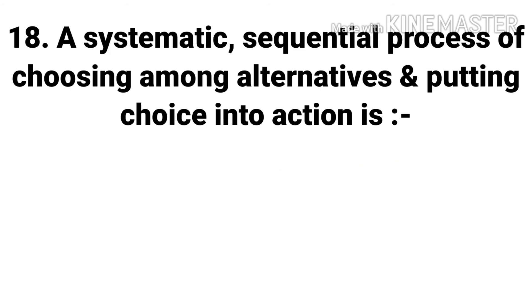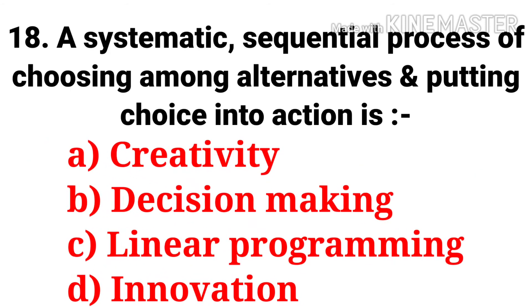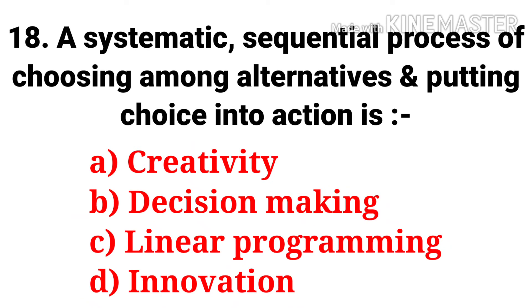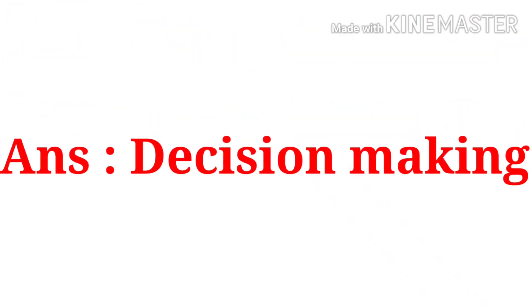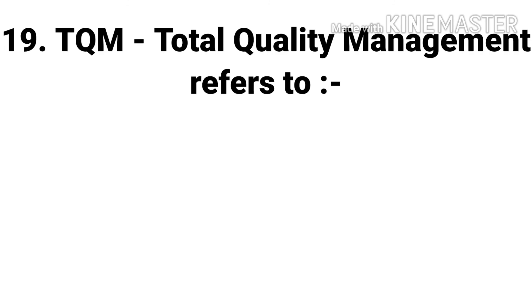Question 18: A systematic sequential process of choosing among alternatives and putting choice into action is — the options are: creativity, decision making, linear programming, and innovation. The answer is decision making.